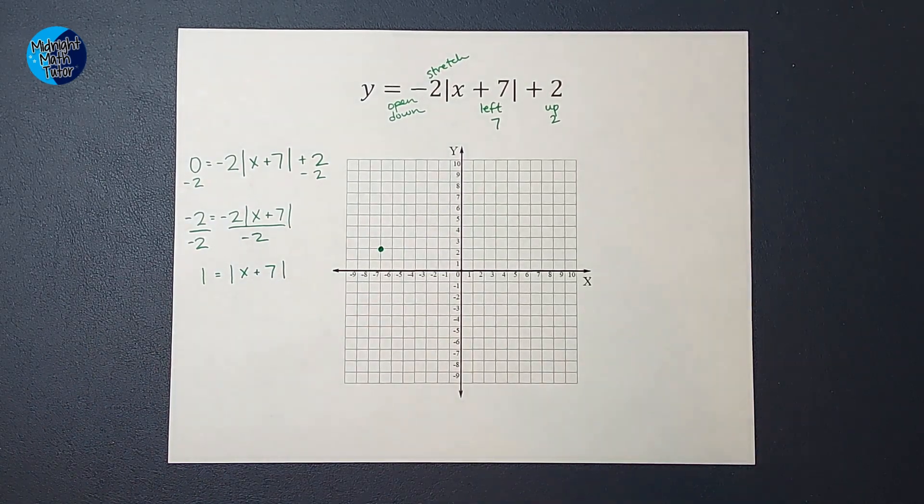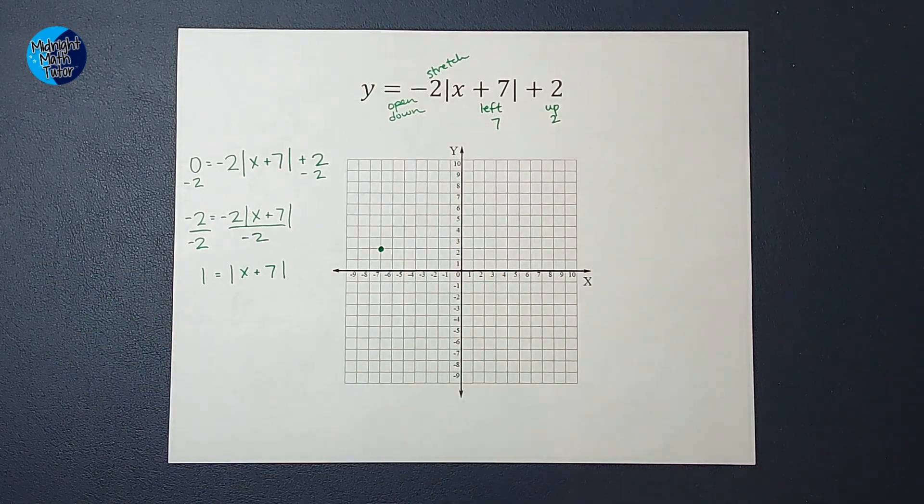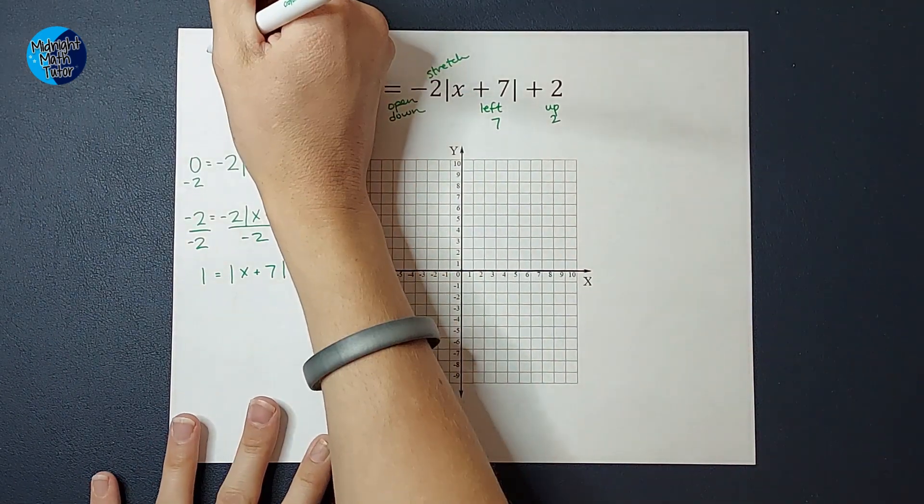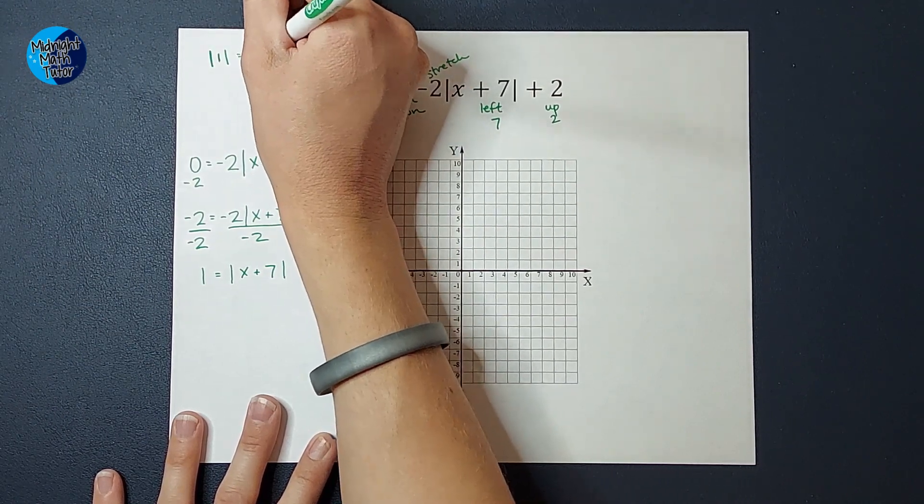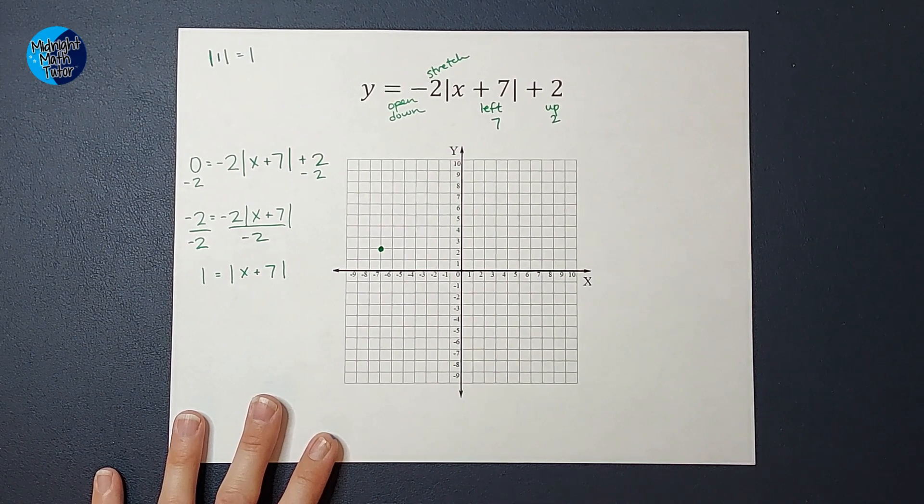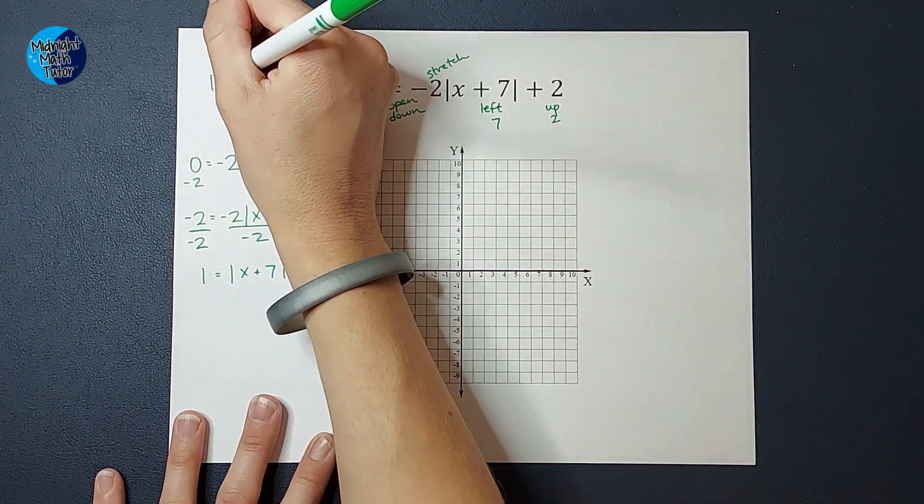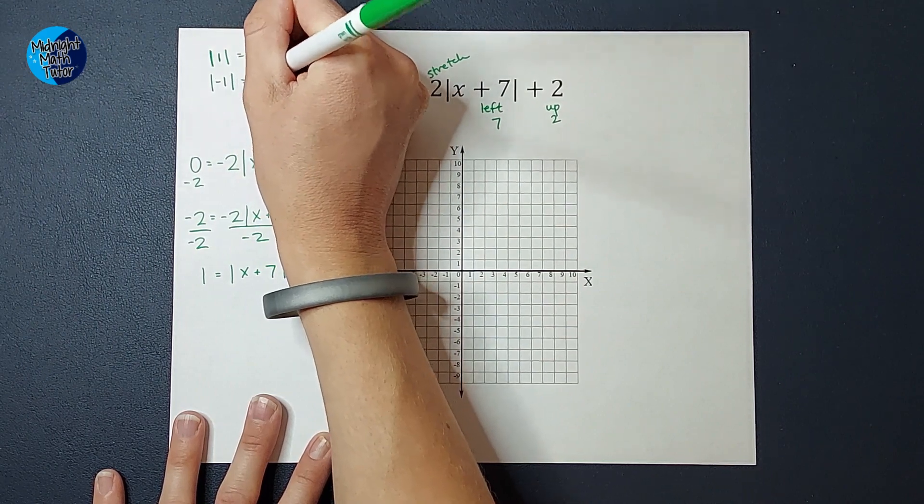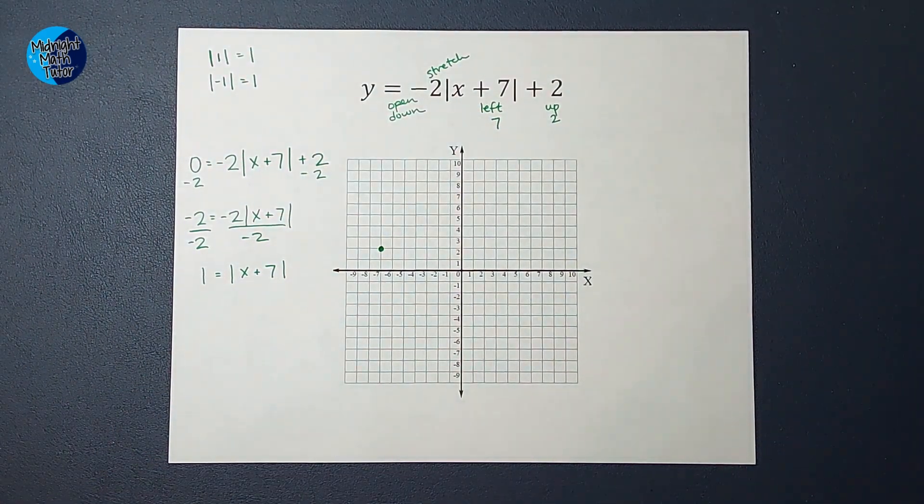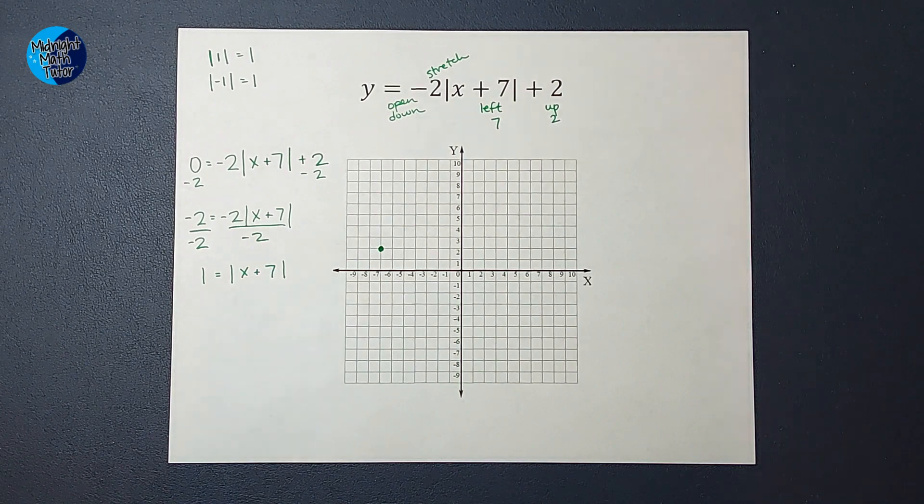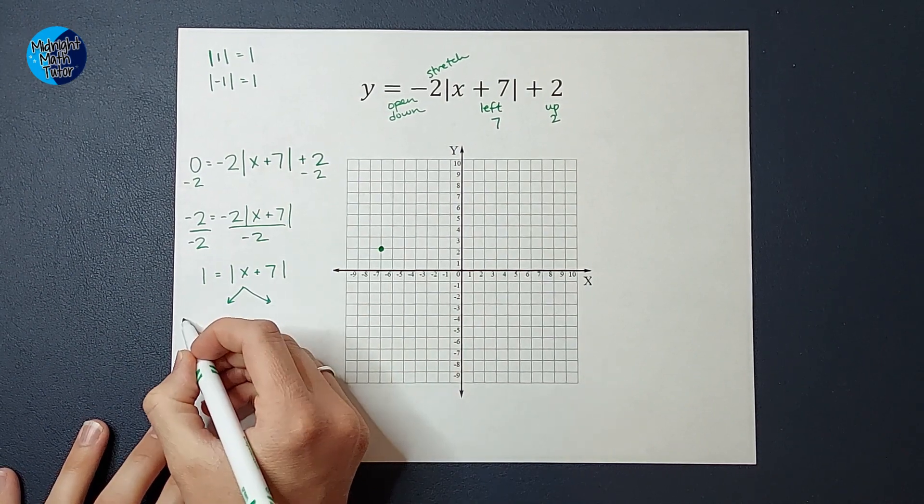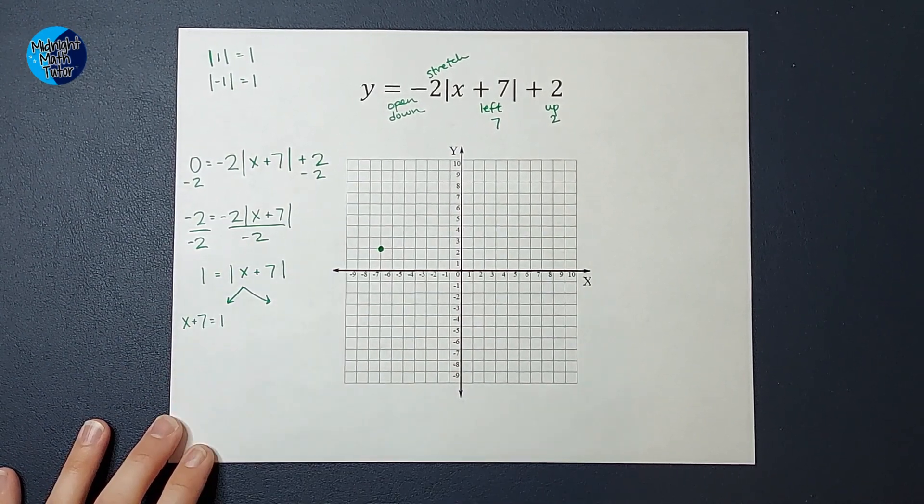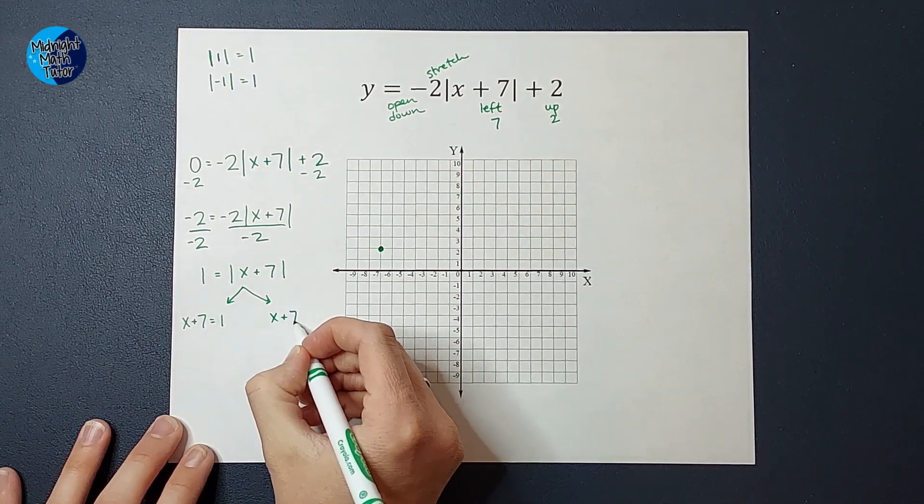Now, if you need an absolute value review, I'll link a video for you in the corner, but absolute value is asking for a distance. So basically, I know that the absolute value of 1 is 1, because 1 is one unit away from zero. It's a distance. Also, the absolute value of -1 is 1, because -1 is a distance of 1 from zero. You can't have a negative distance. So basically, what I know here is that this number inside, x + 7, it could be equal to 1, and it could be equal to -1.